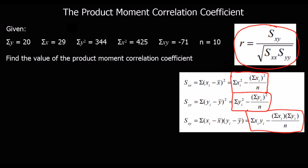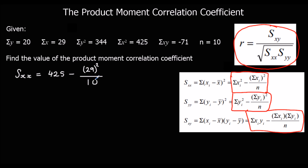Let's do this step by step. First, we're going to work out Sxx, Syy, and Sxy. We've been given all the summary statistics. So Sxx is the sum of the x squareds, which is 425, minus the sum of the x's squared — so 29 squared — over n, which is 10. Typing this into the calculator, we get 340.9.